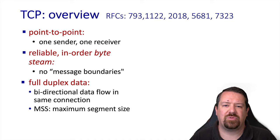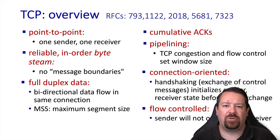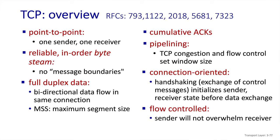One term that we will use quite a bit is the MSS, or maximum segment size. From the last video, you'll remember the idea of cumulative ACKs and pipelining, and TCP implements both of these. TCP is also connection-oriented, so it has a connection establishment phase. And it's flow-controlled, which means that the sender will not be able to overwhelm the receiver's buffer.